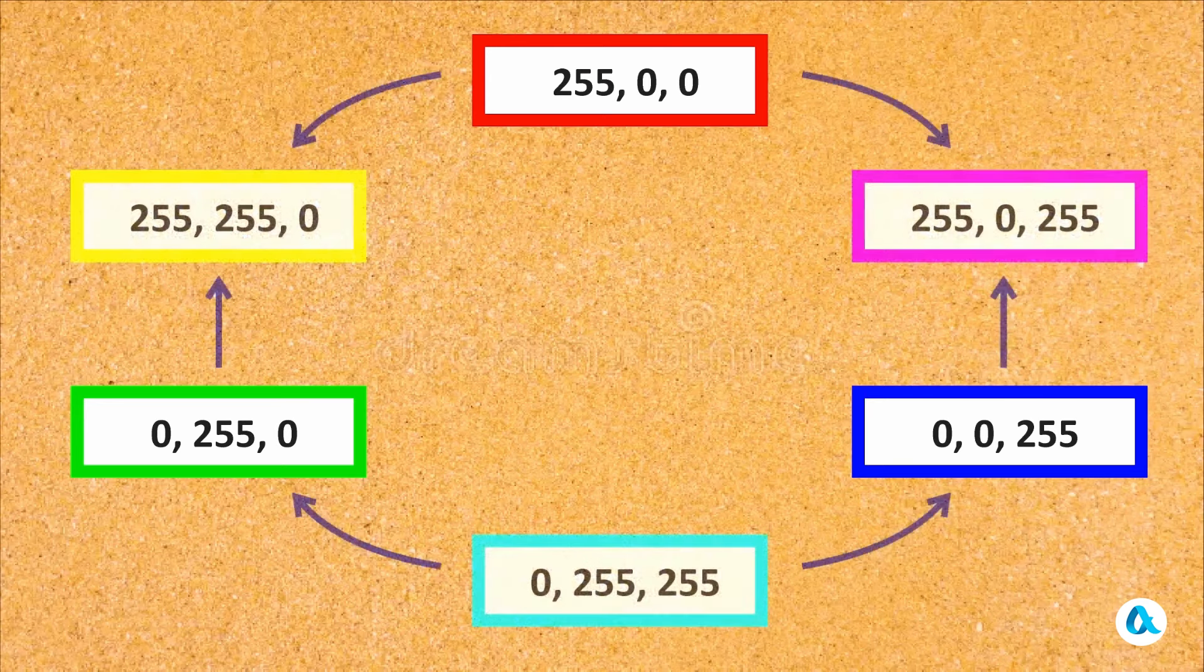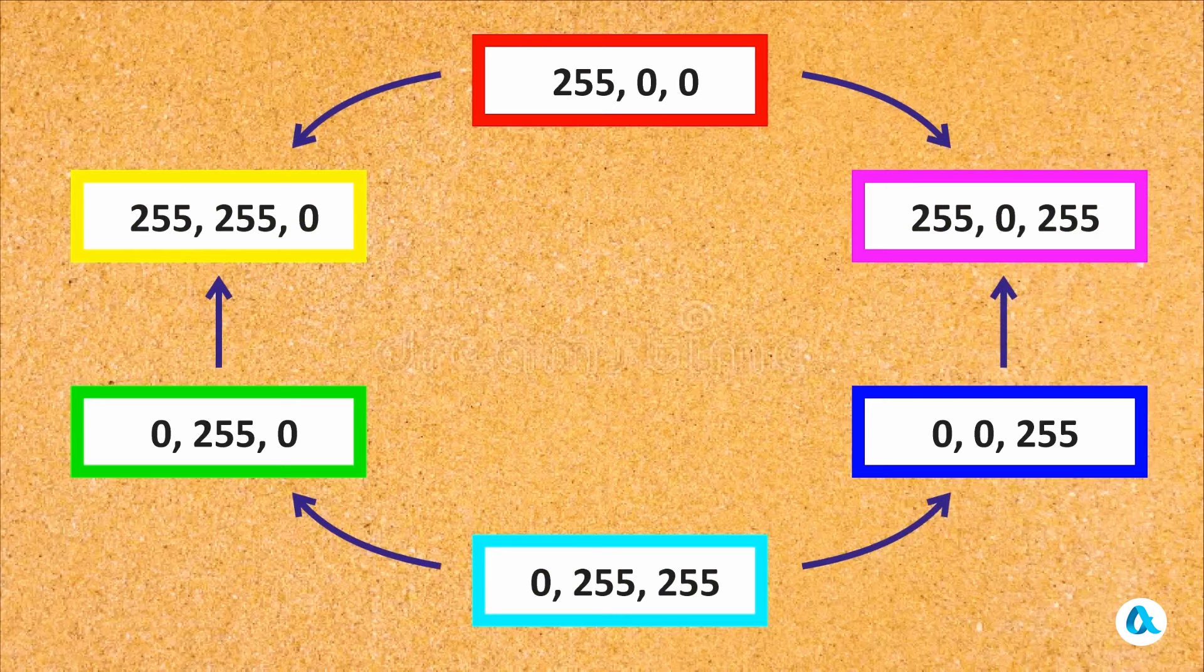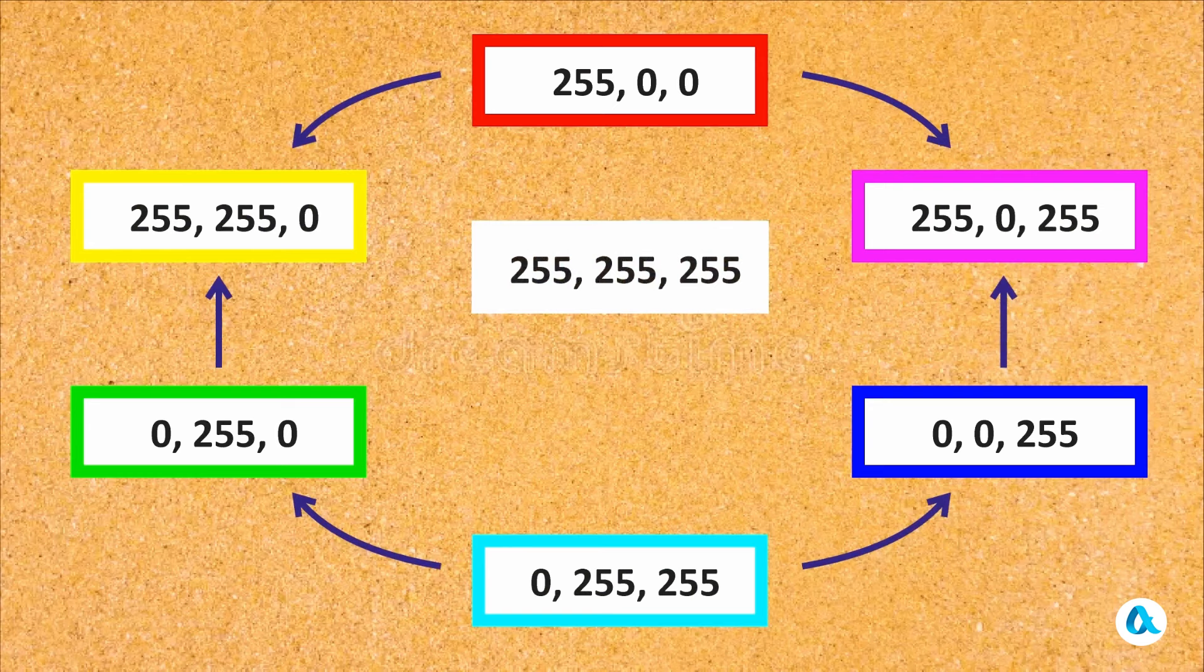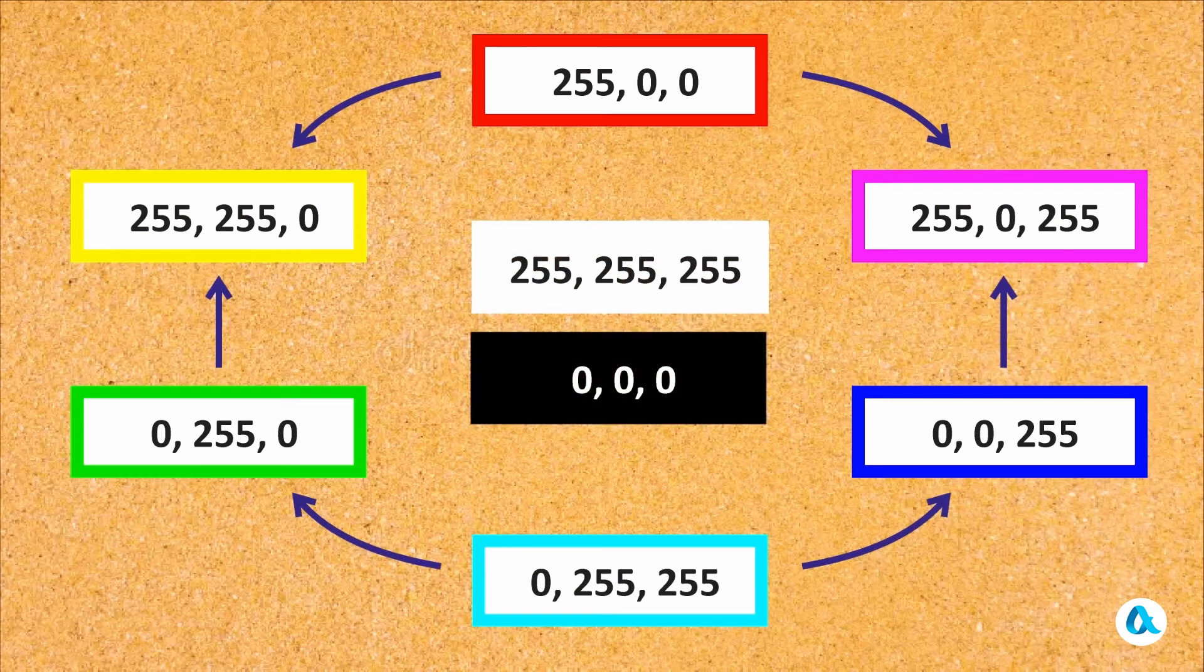By combining primary colors in pairs, we obtain yellow, cyan, and magenta. Combining all three primary colors leads to the creation of the color white. Additionally, the color black is situated at the origin coordinates of 0, 0, 0.